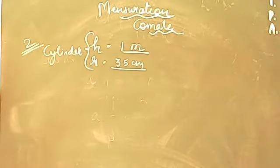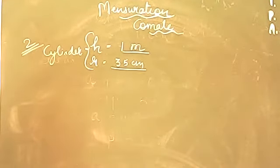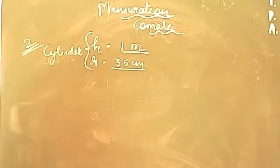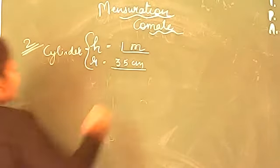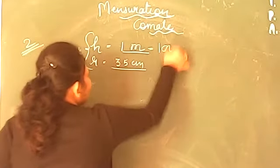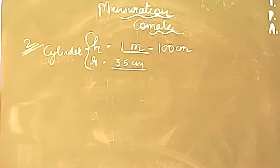You have to find the volume. You have two choices: either convert height to centimeters or convert radius to meters. Going from a smaller unit to a greater unit requires division, giving 0.35, which is a lengthier process. So the easier way is to convert 1 meter to 100 centimeters. Now height is in centimeter form and radius was already given in centimeters.